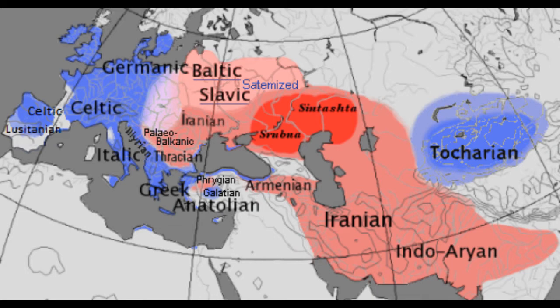Armenian is discussed whether it's actually satem — you can see on this map it's displayed as satem. And Albanian as well, because Albanian and Armenian seem to be somewhat satemized, but they're not fully satemized.